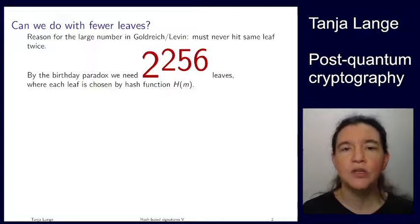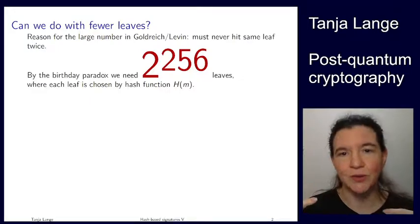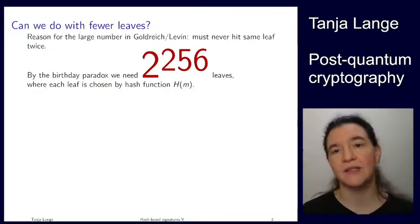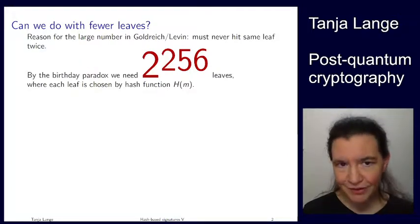So it must have so many leaves that the chance of hitting the same one twice is negligible. That typically means 2 to the minus 128, and since it's a square root tag, we need the square of 2^128, meaning 2 to the 256 many leaves.